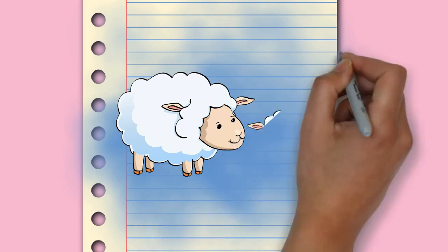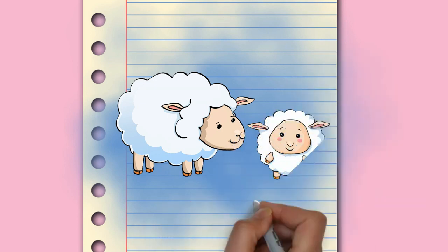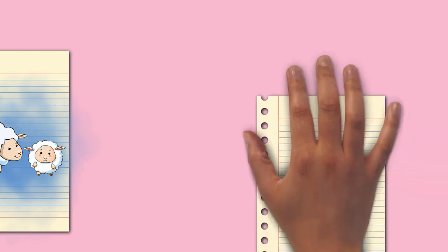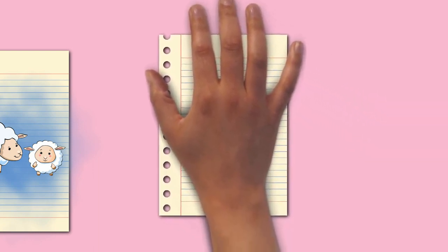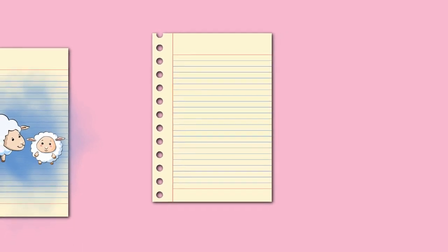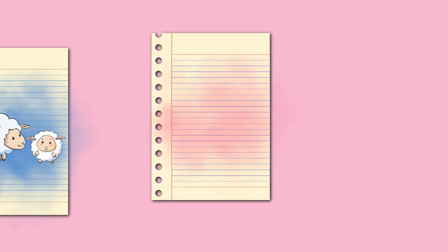Domestic sheep are relatively small ruminants, usually with a crimped hair called wool and often with horns forming a lateral spiral. They differ from their wild relatives in several respects, having become uniquely neotenic as a result of selective breeding by humans. Depending on breed, domestic sheep may have no horns at all (i.e. polled), or horns in both sexes, or in males only. Most horned breeds have a single pair, but a few breeds may have several.